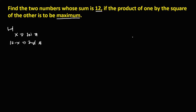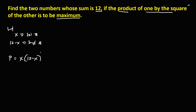Since in the problem the product of one by the square of the other is to be maximum, we define P for the product. That's x times (12 minus x) squared, since we take one times the square of the other.